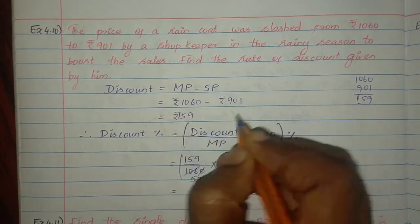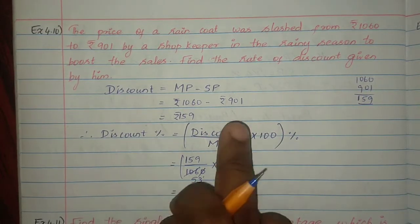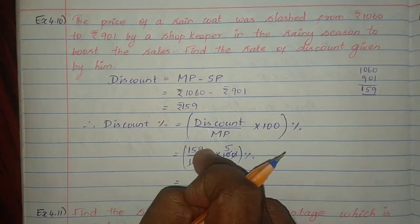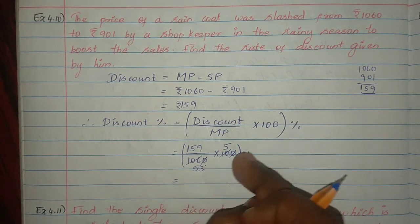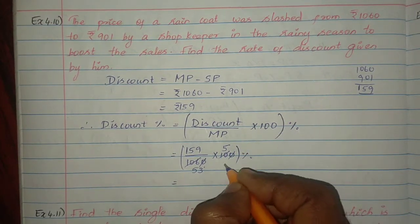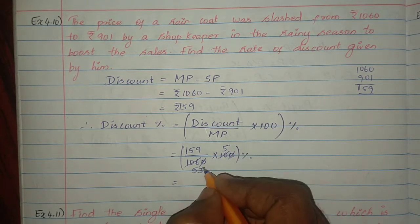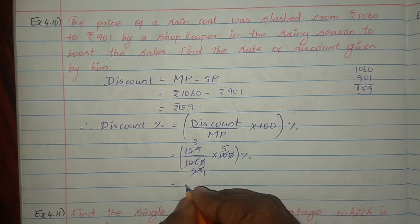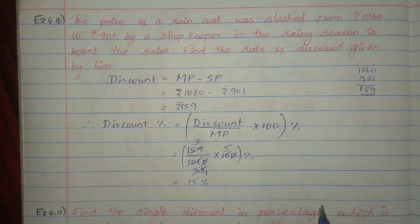Subtracting gives a discount of Rs. 159. So discount percentage equals discount divided by market price into 100%, which is 159 divided by 1,060 into 100%. Simplifying: 3 into 5 equals 15%. So the discount percentage is 15%.